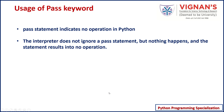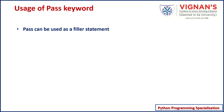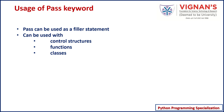When the statement results in no operation, what is the use of such a statement? The pass statement is useful when you don't have any idea about the implementation of a function, class, or control structure. You can use pass as a placeholder or filler statement, and in the future, whenever you would like to implement the code, you can replace this pass statement with the actual implementation. This can be used with control structures, functions, or classes.